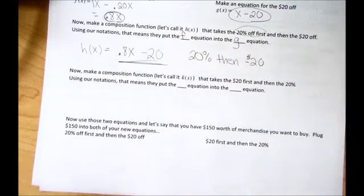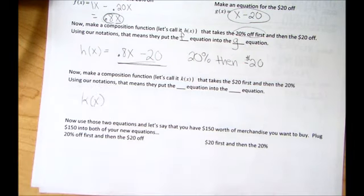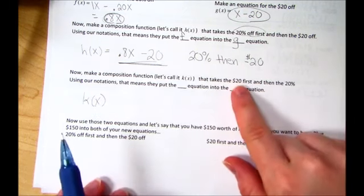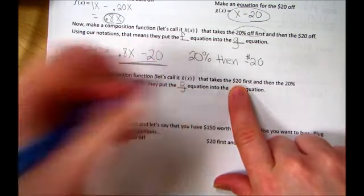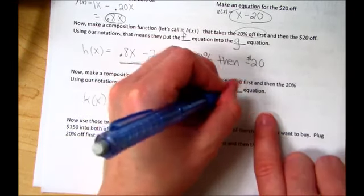Now we're going to make another composition function. We'll call it K of X. It's going to take the $20 off first, and then apply the 20%. Using our notation, the $20, that's the G equation, and it puts it into the F equation.